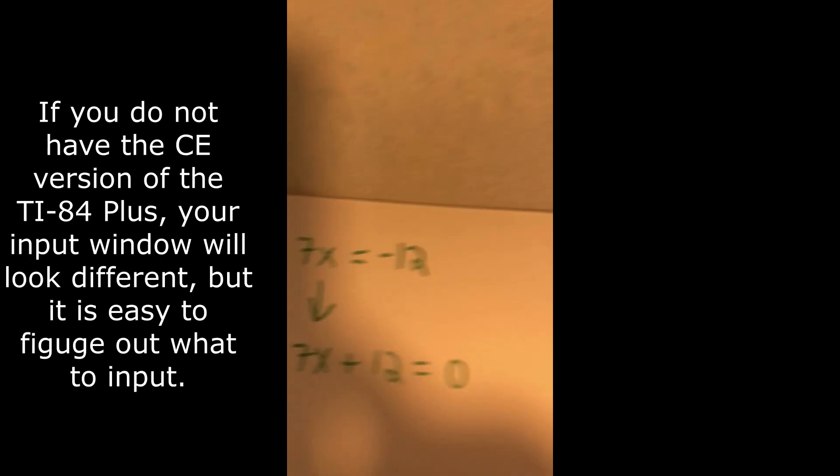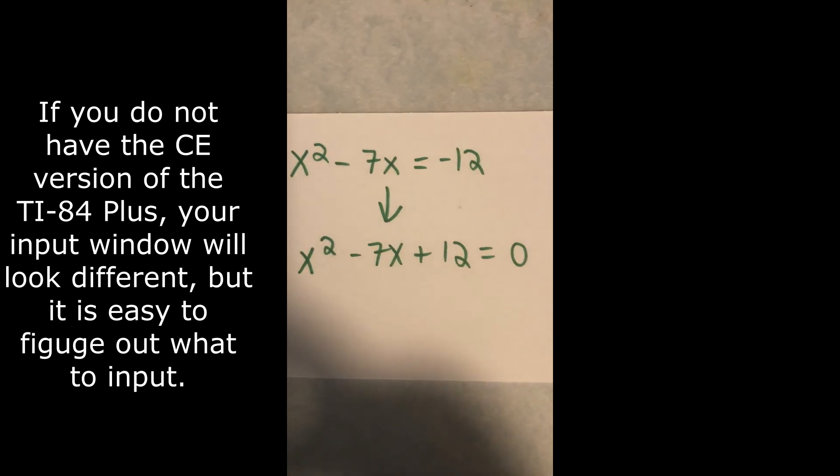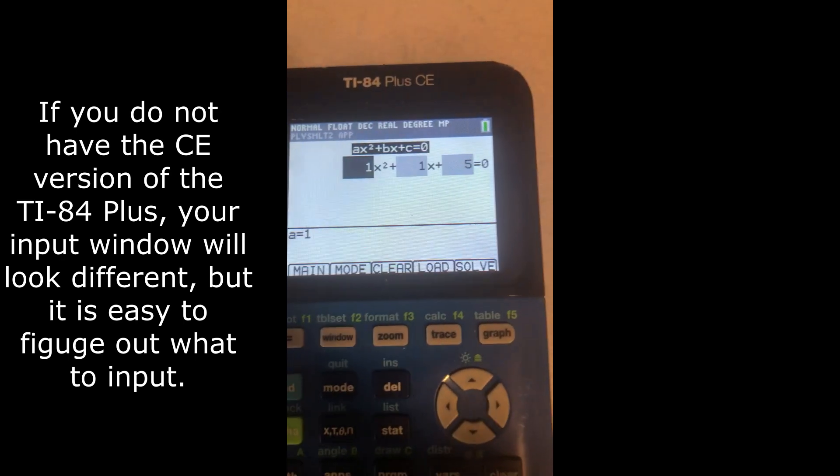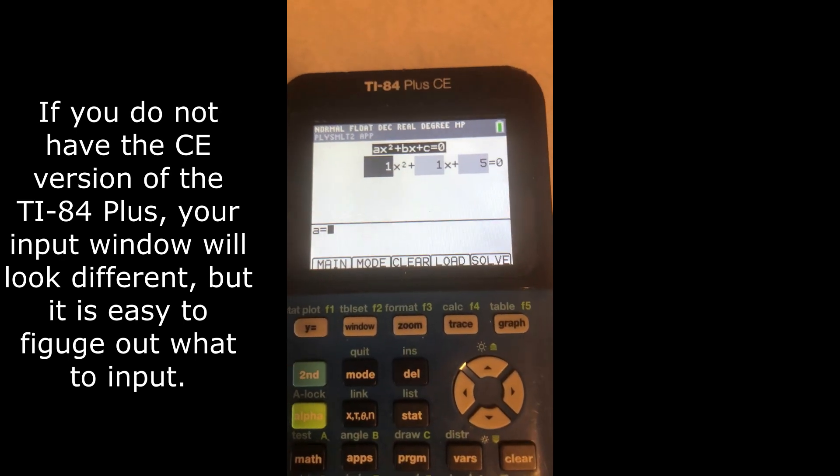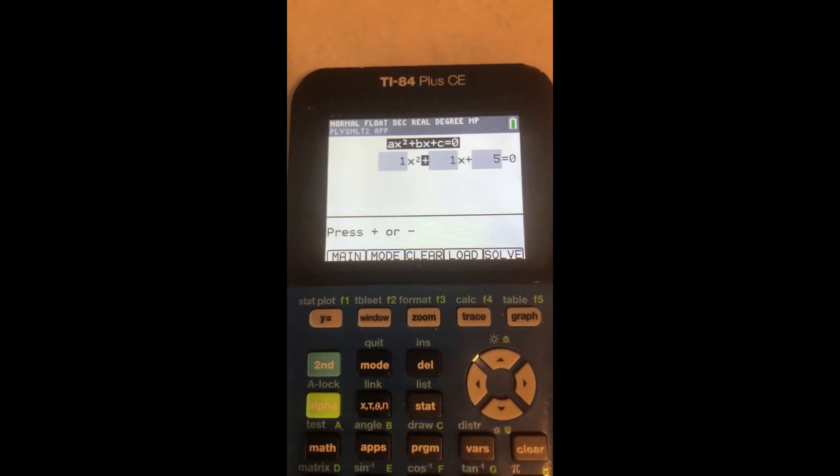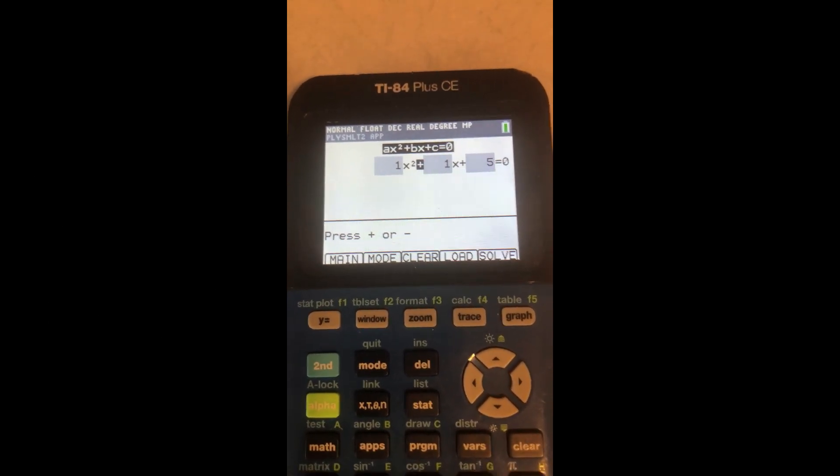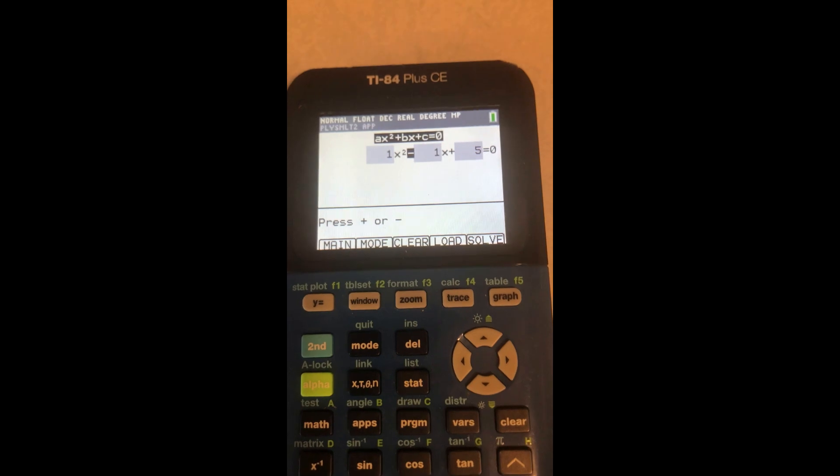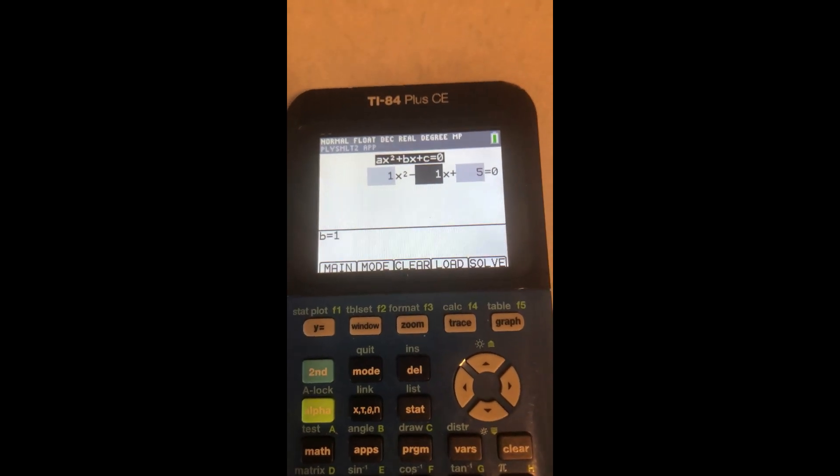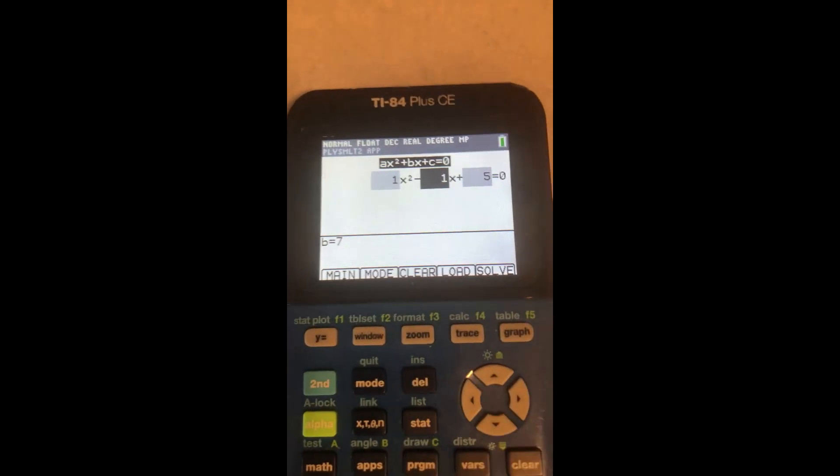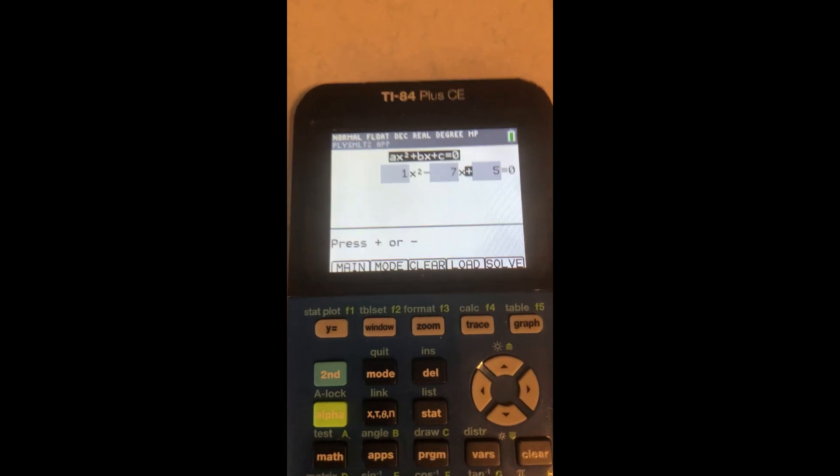First, I'll just press 1 enter, and I want a minus, so I'm gonna press a minus there enter. And then 7 for 7x enter.